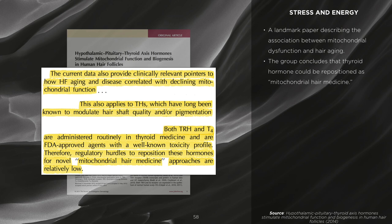A landmark paper described the association between mitochondrial dysfunction and hair aging. The group concluded that thyroid hormone could be repositioned as mitochondrial hair medicine. This is no surprise as thyroid hormone is often called the hormone of respiration and is needed for the efficient production of energy. Carbon dioxide cannot be produced efficiently without thyroid hormone. Moreover, thyroid hormone is needed to energize cells, which maintains their structure. When thyroid hormone is absent, the cell loses its organization and damage to the mitochondria occurs.